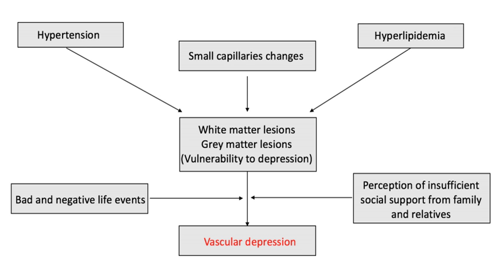Several studies show that the lesions associated with vascular depression are linked to poor depression treatment outcomes. A limitation of these studies is that they lack a measurement of cerebrovascular risk factors before and after the experimental interventions. Therefore, it is unknown if these treatments are targeting these factors specifically or the more general categorization of late-onset geriatric depression. Keeping this in mind, transcranial magnetic stimulation (TMS), nimodipine, citalopram, and carotid stent placements have been shown to be effective treatments for some individuals with vascular depression.